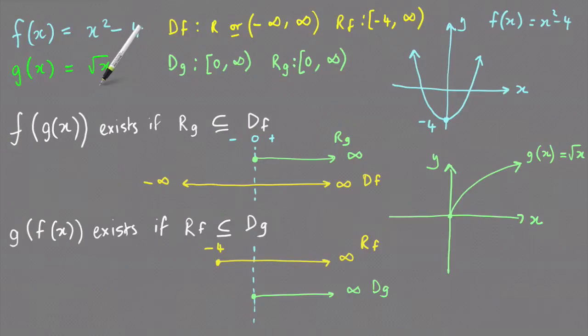Looking at the g function equal to the square root of x, your basic square root graph is like a sideways parabola, just the top half of it, starting at 0, 0 and heading off, both the x and the y values heading off to infinity. So that means the domain is going to be from zero inclusive up to positive infinity.